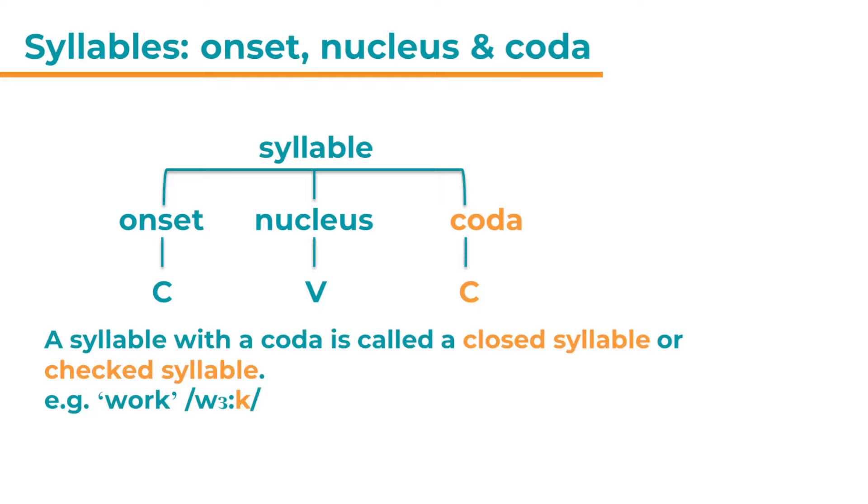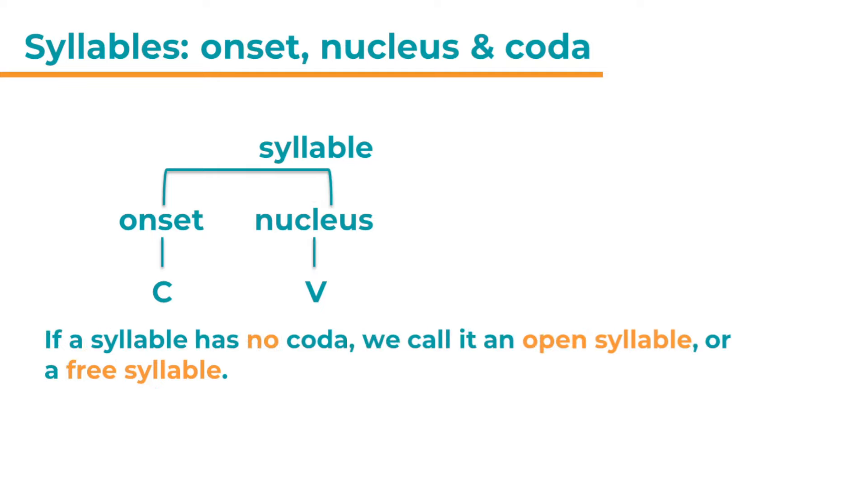A syllable with a coda is called a closed syllable. Or sometimes also a checked syllable. So for example, work. The k is the coda. So this is a closed syllable. If a syllable has no coda, we call it an open syllable. Or a free syllable. It's the same. Open or free syllable. For example, try. And here again, this is a full word in its own right. End in a vowel sound. Here it's a diphthong. I try. Here's another example. Free. So here we end with E. That's the nucleus. And so this is an open syllable.